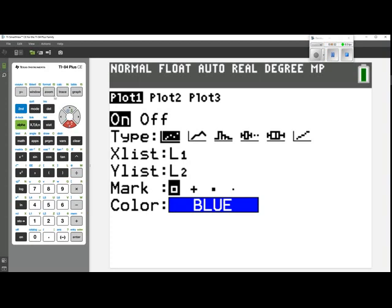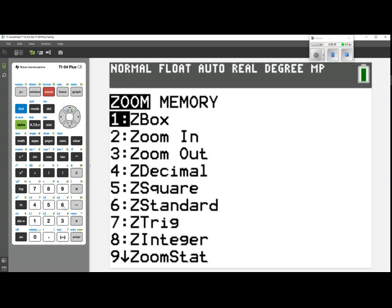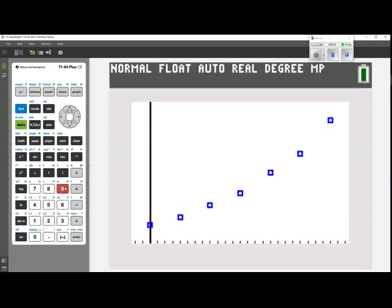The next thing we can do is set a good window for our plot, so we can go to zoom, and then down to zoom 9, which is zoom stat. So there's our scatter plot. We can see it's curving like an exponential growth function would.